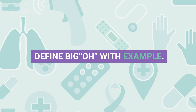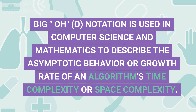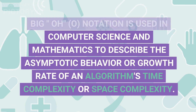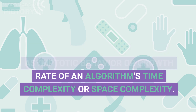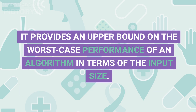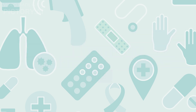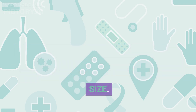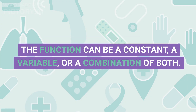Q2. Define Big-O notation with example. Big-O notation is used in computer science and mathematics to describe the asymptotic behavior or growth rate of an algorithm's time complexity or space complexity. It provides an upper bound on the worst-case performance of an algorithm in terms of the input size. In Big-O notation, the letter O is followed by a function that represents the upper bound of the algorithm's time or space complexity in terms of the input size. The function can be a constant, a variable, or a combination of both.